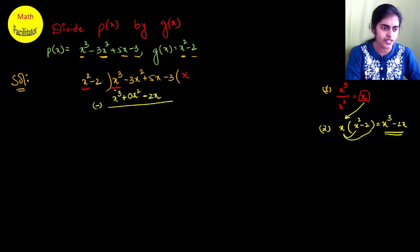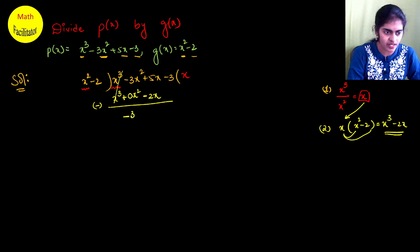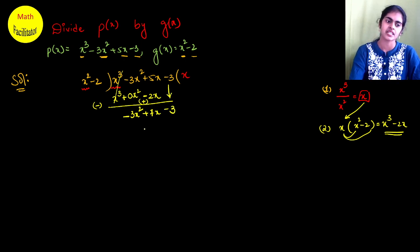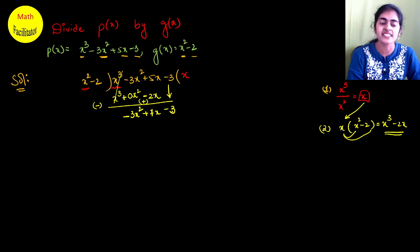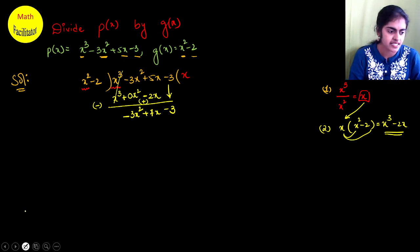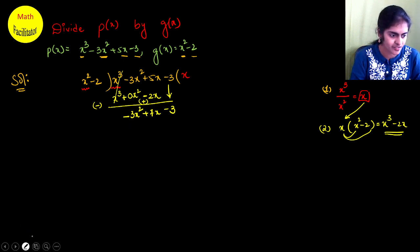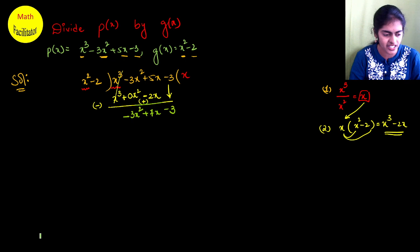Now subtract, just like in normal division. x³ and x³ cancel. The -3x² comes down as it is, and the sign changes so -(-2x) becomes +2x, giving 7x. Bring down the remaining term -3. So the new dividend is -3x² + 7x - 3.